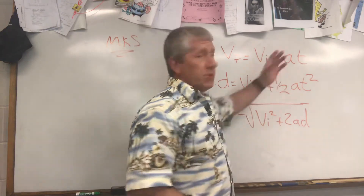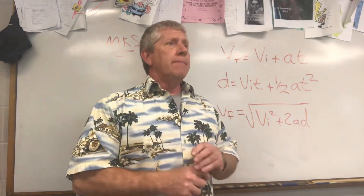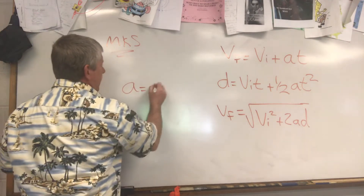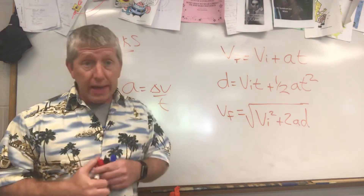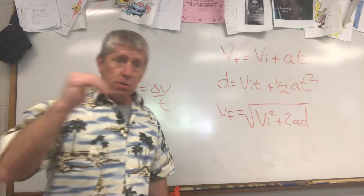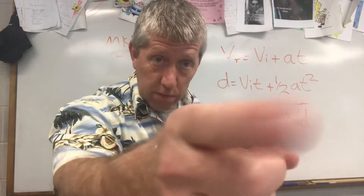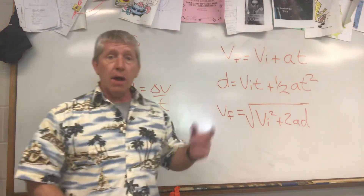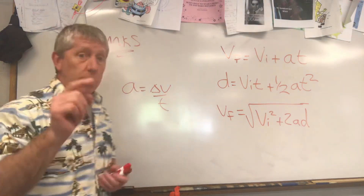One quick point going back to acceleration: earlier we said acceleration can mean decelerating or negative acceleration when slowing down. By definition, acceleration is change in velocity over time. If you're at a red light going 40 miles per hour and you come to a stop at zero, your velocity is changing, so by definition you are still accelerating even though you're slowing down. Hard to wrap your brain around, but that is correct.